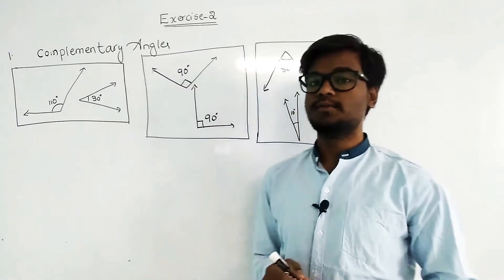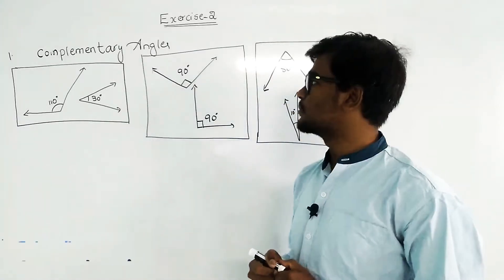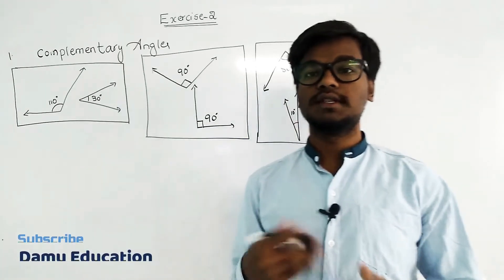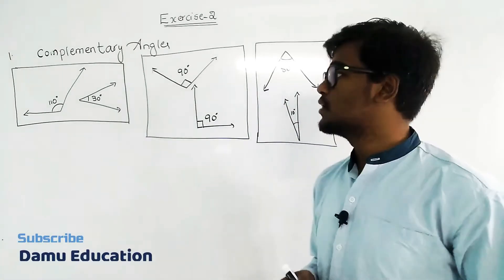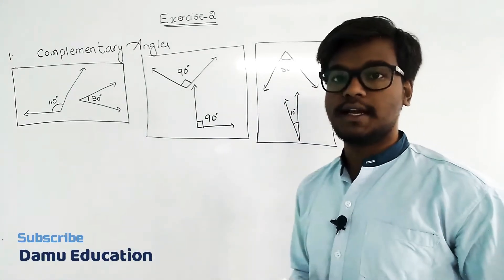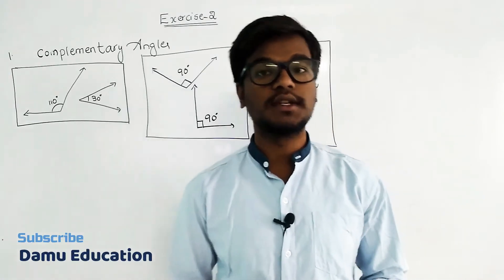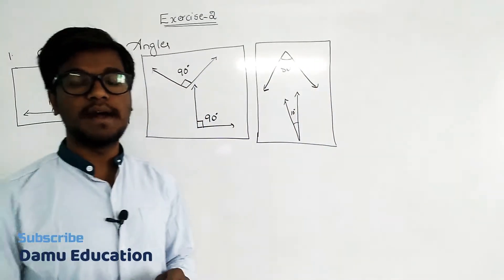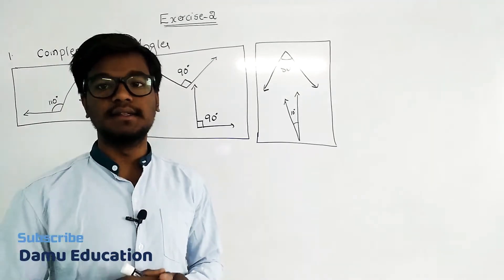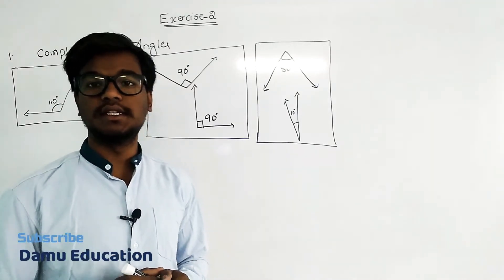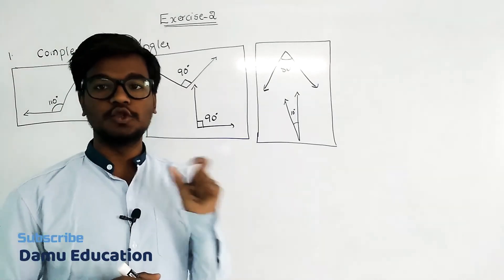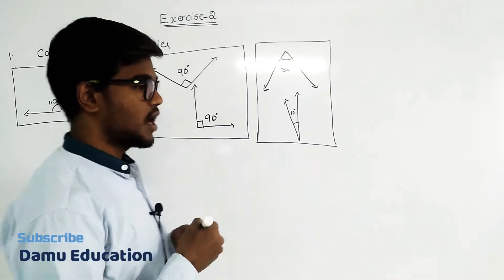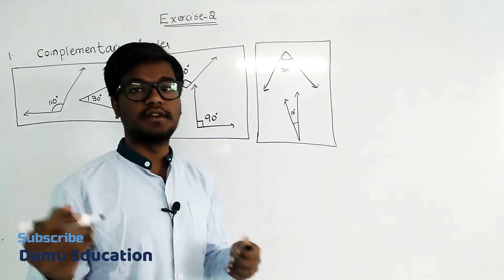Hello viewers. In this module I am going to explain the solution for the first question: which of the following are complementary angles? First we should know what a complementary angle is. A complementary angle is when the sum of any two angles equals 90 degrees — those two angles are called complementary angles.